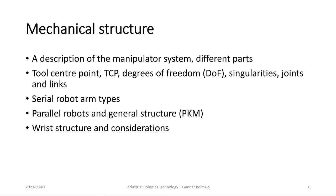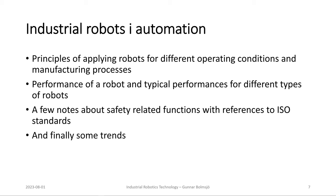The third chapter on mechanical structure is rewritten and updated from the Swedish version. It includes topics such as tool center point, degrees of freedom, singularities, joints and links, the different types of serial robot arms, the principles behind parallel robots, and general structure. Most of this has been rewritten, updated, and expanded relative to the old Swedish version, along with a discussion of robot structure and related considerations.